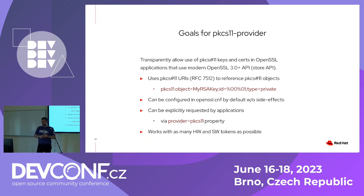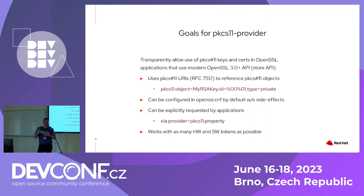You can use standard PKCS11 URIs to define how to access a key — it's a well-done standard that gives you all the tools to uniquely identify a key in a token. Another goal was to configure the PKCS11 provider in systems like Fedora or RHEL by default as a standard provider without side effects in applications that aren't using it. Applications that want to explicitly force use of the provider can use a property like 'provider=pkcs11'. The final goal was to make it work with as many actual hardware tokens as possible, since many tokens support only a subset of algorithms and functions, sometimes with quirks.